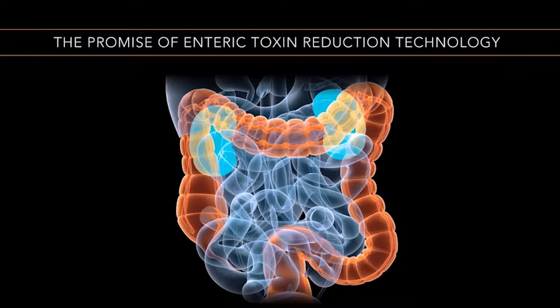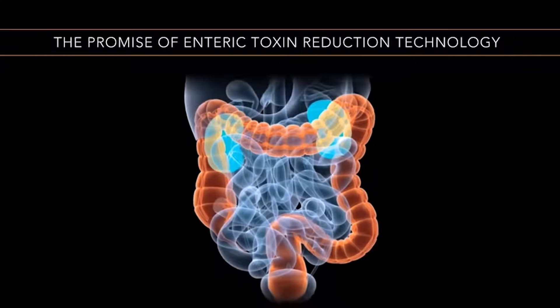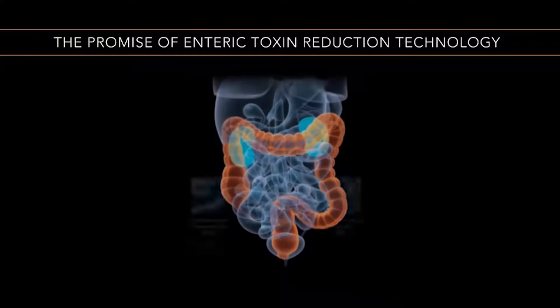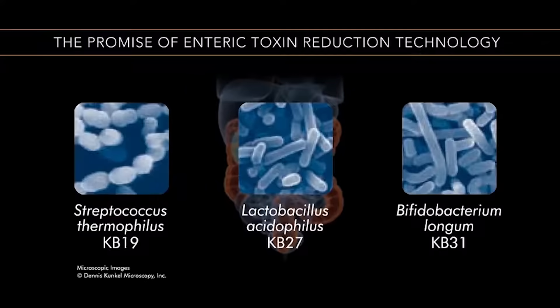Enteric toxin reduction technology is a patented process that utilizes probiotics, carefully selected beneficial bacteria, to metabolize circulating uremic toxins when they diffuse out of the blood and into the colon.